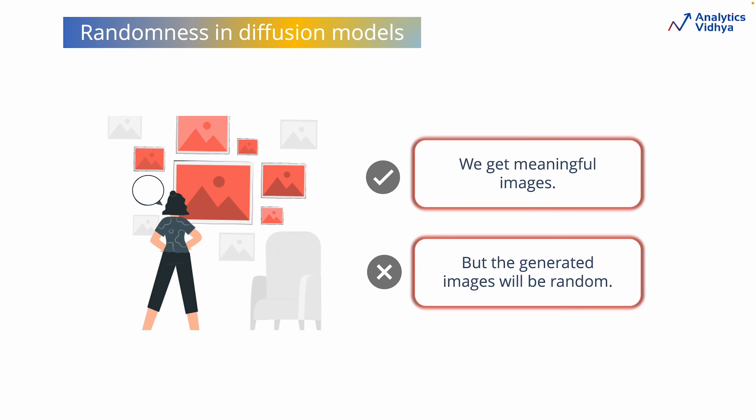Although this process will create meaningful images, we will have no control over the images as they would be generated at random. That is why the advanced image generative tools that we work with today use conditioning on top of the diffusion-based models to generate images specific to the prompts which can either be text, image, audio, or a combination of these.